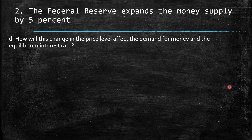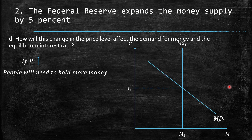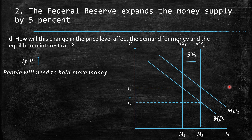d. How will the change in the price level affect the demand for money and the equilibrium interest rate? If prices go up, people will need to hold more money. When people need to hold more money, the money demand shifts to the right. Whether the interest rate rises or falls depends on whether the money demand movement is larger or smaller than the movement of the money supply.